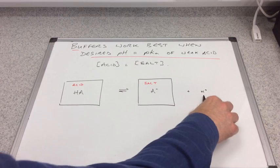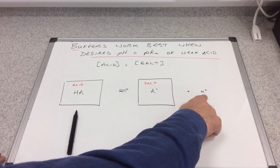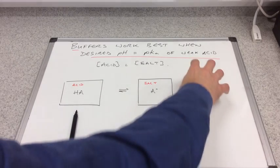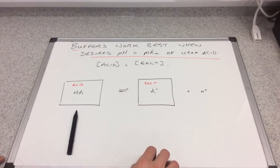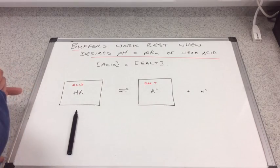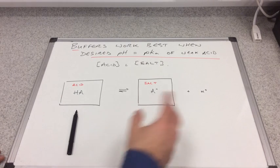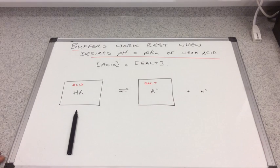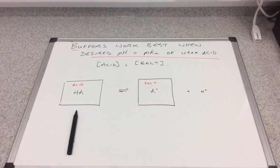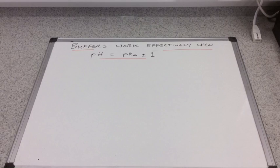Correspondingly, if you lower the H+ concentration by adding some base, you remove the H+ concentration and you need a large reservoir of weak acid to dissociate more and move over to the right and maintain the pH. Hopefully these boxes can help you to visualize that.